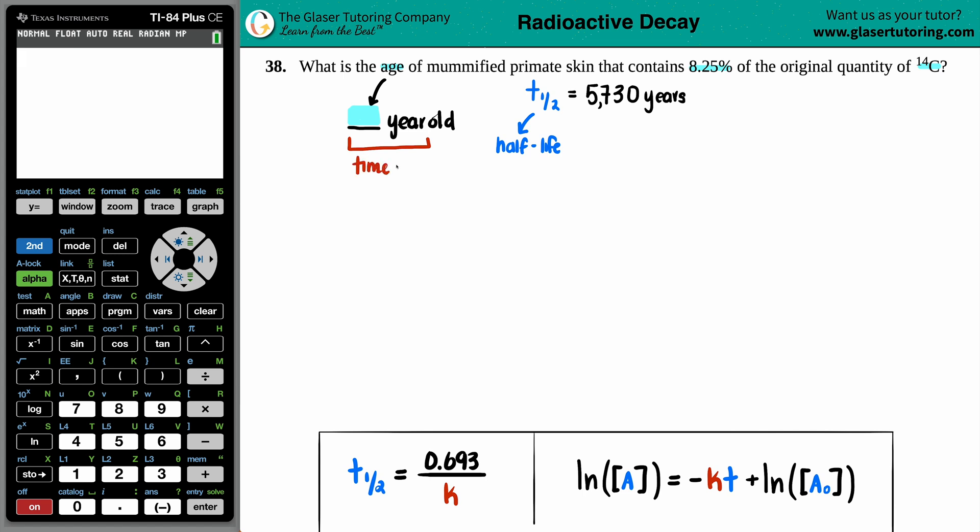We want to know how much time has elapsed in which that carbon-14, the radioactive carbon, to decompose to 8.25% of the original. Now, if we're talking about carbon-14, carbon-14 is one of the more famous radioactive material. Generally, if you see carbon-14, it's always going to be radioactive. So we're dealing with the radioactive isotope. So radioactive decay, it's going to decay.